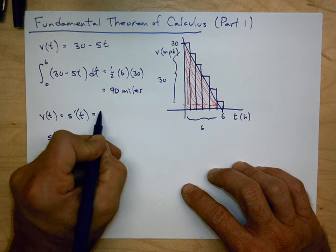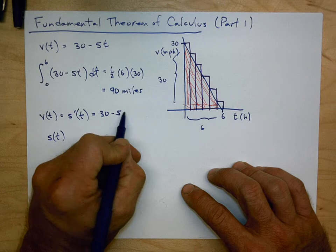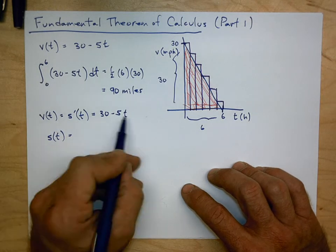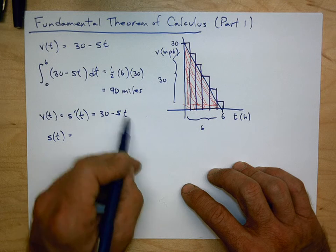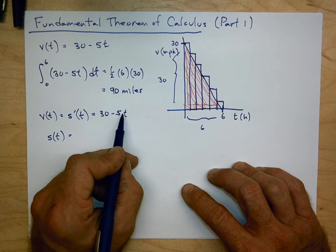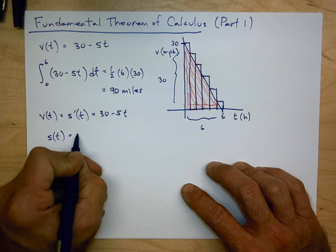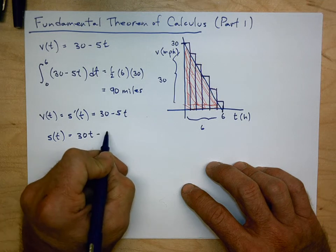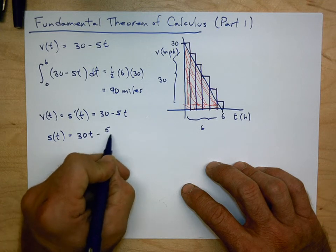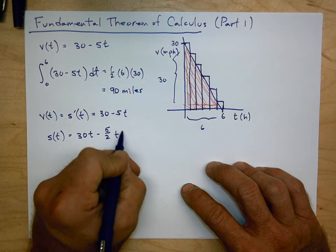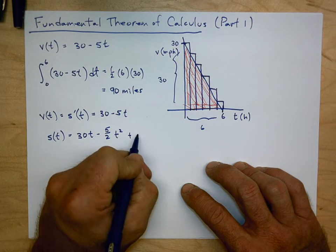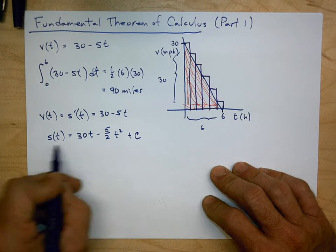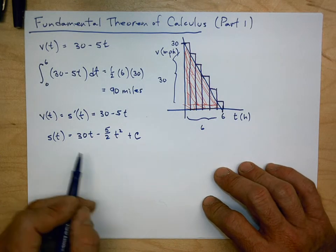We know that s′(t) = 30 − 5t. What function would I have to take the derivative of to get 30 − 5t? It should come as no surprise that it's 30t minus 5t²/2, or we can write it as (5/2)t², plus C. This is the antiderivative of our velocity function.